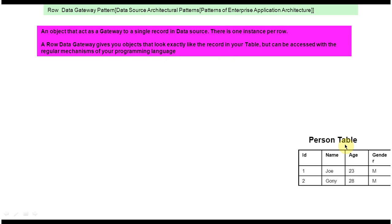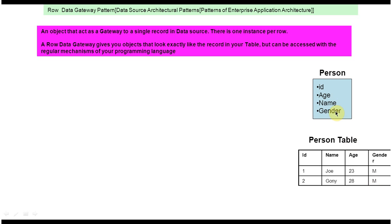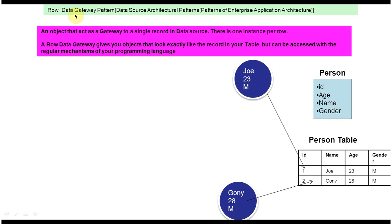To explain this, I have taken a person table and it has four columns: ID, name, age, and gender. This person table has two rows — the first row represents Joe's information and the second row represents Goni's information. If you want to create a class for this person table, it will look like this. This is a Person class; it will have ID, age, name, and gender, and this class will be mapped to the person table.